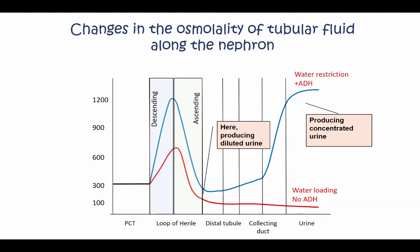Unfortunately, students often don't pay enough attention to this graph. What we can see is that coming into the loop of Henle, the fluid is isosmolar with an osmolality of approximately 300 milliosmoles. As described, in the descending limb the fluid will become hyperosmotic, and then as it goes along the ascending limb it becomes diluted. When the fluid flows into the distal convoluted tubule and the early collecting duct, the urine is in fact diluted.